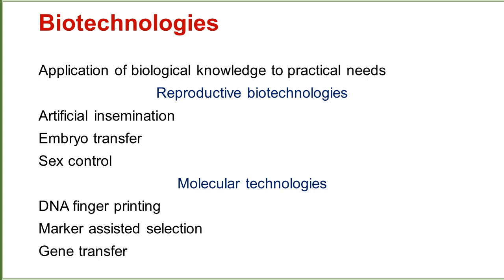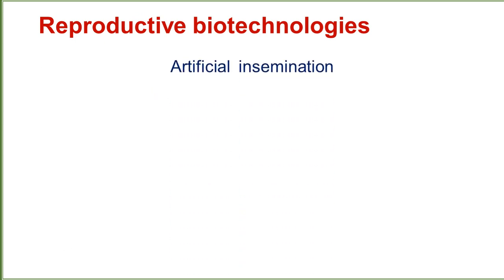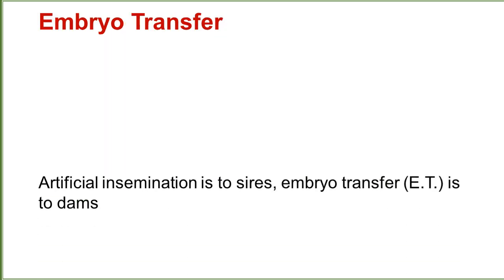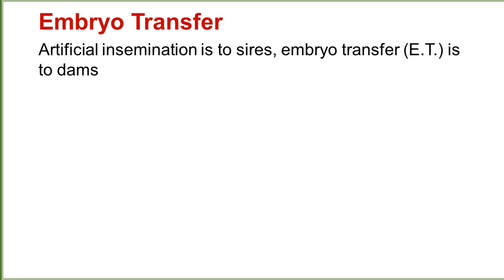The first reproductive technology is artificial insemination. It enables long-term semen storage without loss of viability, promoting conservation of endangered species and preservation of elite genotypes. The next technology is embryo transfer. While artificial insemination relates to sires, embryo transfer relates to dams.